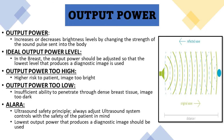The third brightness control is output power. Output power increases or decreases brightness levels by changing the strength of the sound pulse that's sent into the body. In the breast, output power should be adjusted so that the lowest level that produces a diagnostic image is used. When output power is too high, there's a higher risk to the patient and the image becomes too bright. When output power is too low, there's insufficient ability to penetrate through dense breast tissue, making the image too dark.